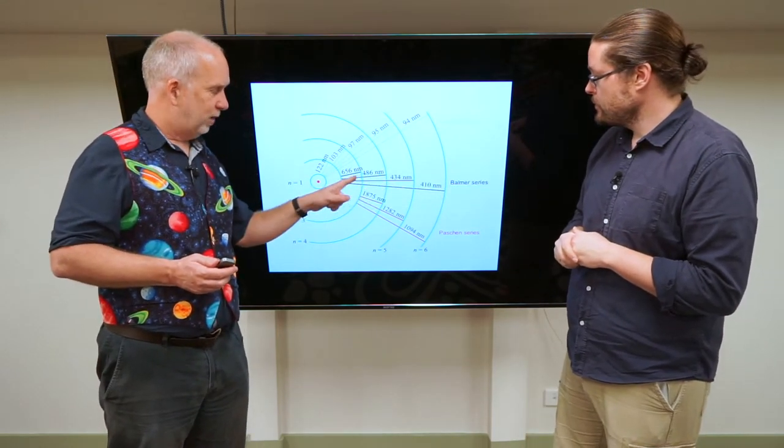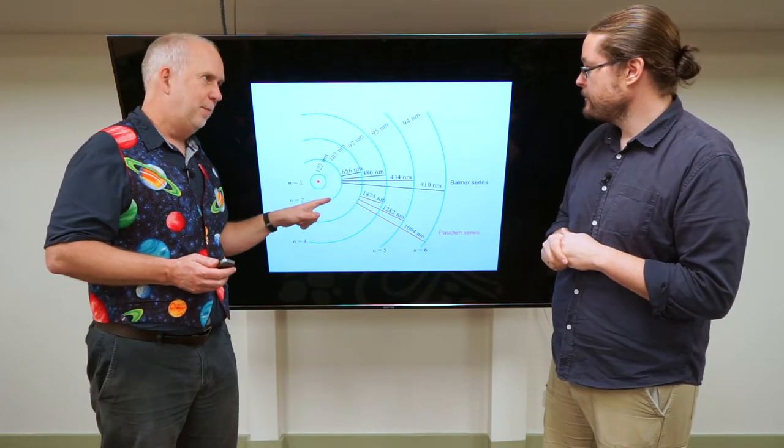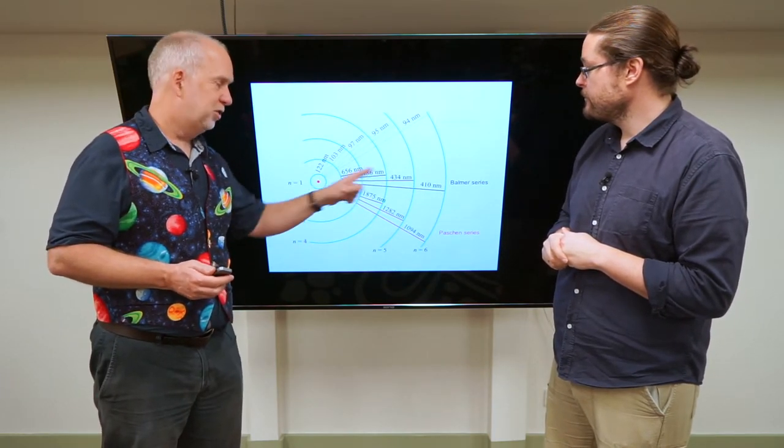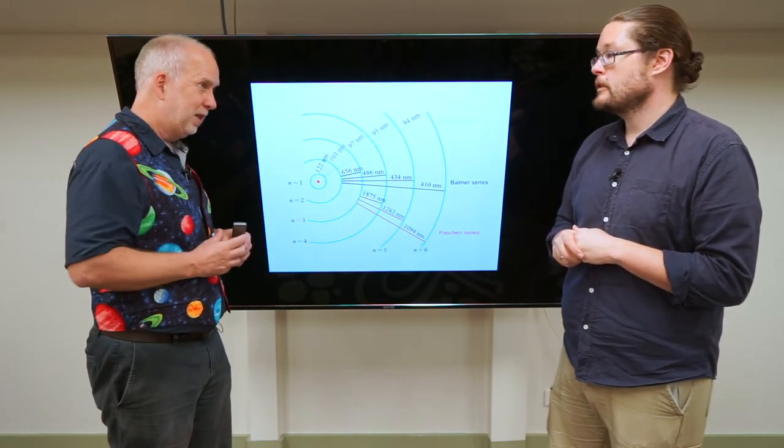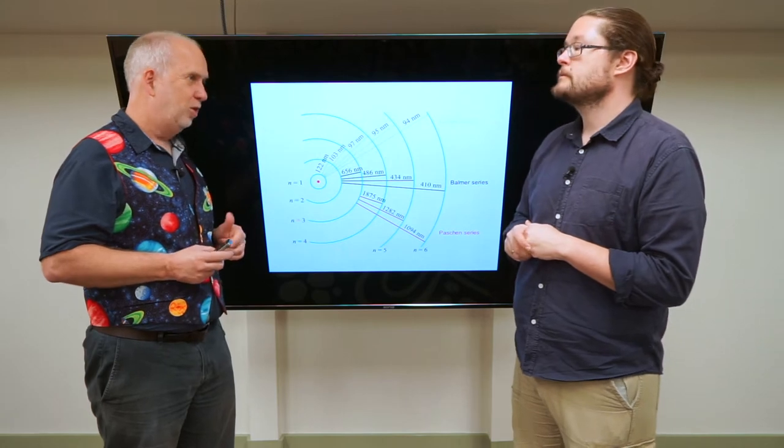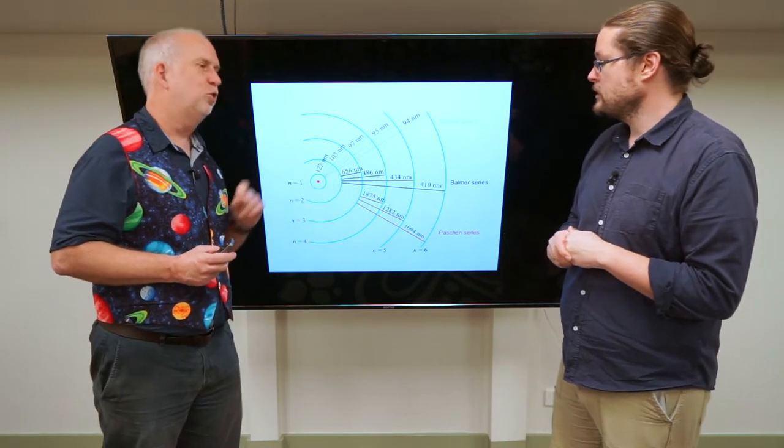When it jumps from one level to another, it's gonna have to give up or gain energy. So if it jumps down it's gonna have to give up energy, and that energy will come out as a photon of light and the wavelength of that photon will reflect the energy gap between the lines.